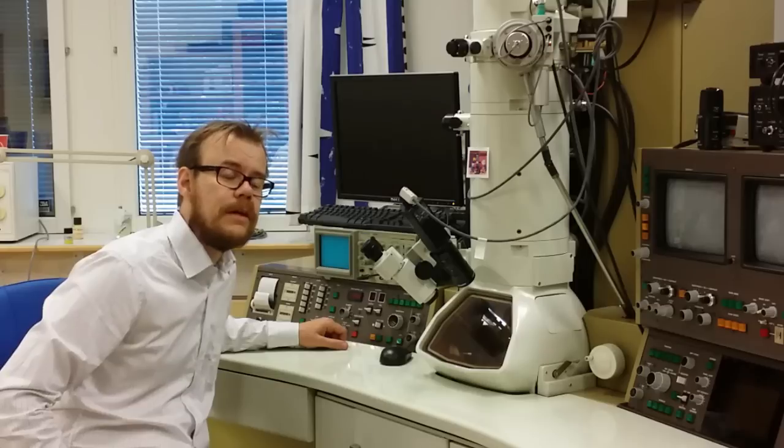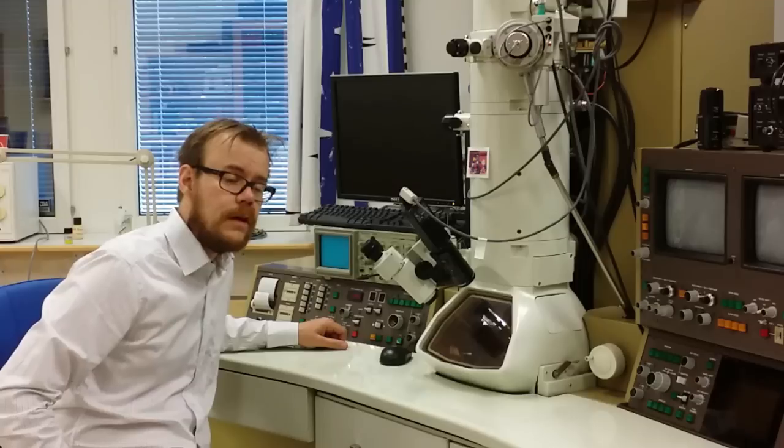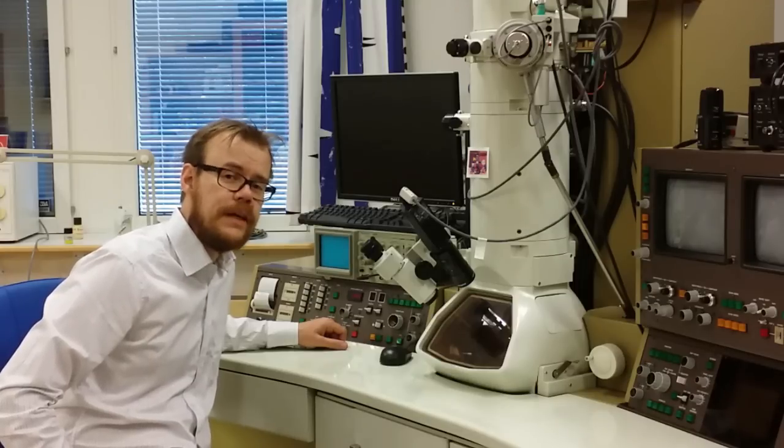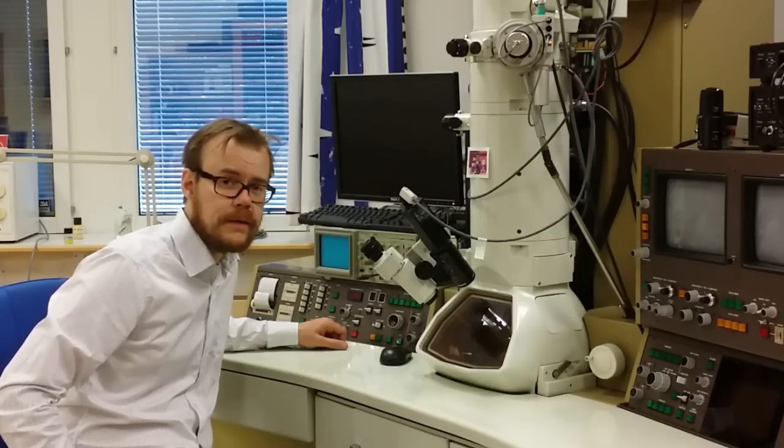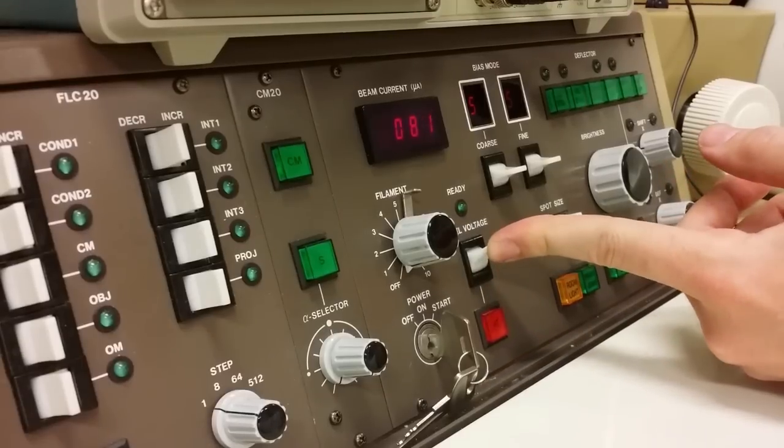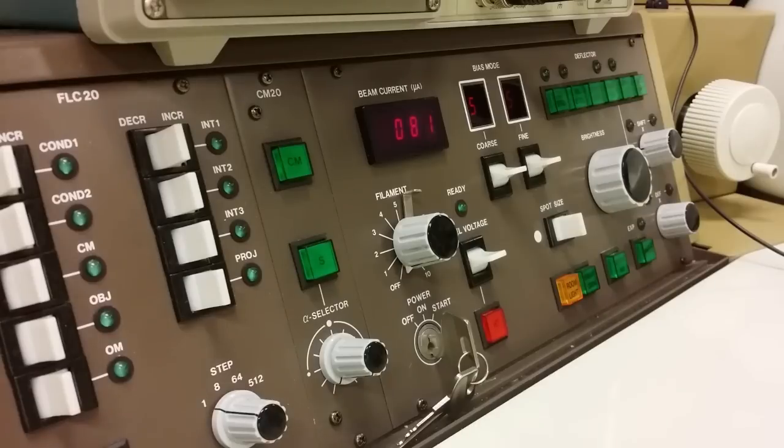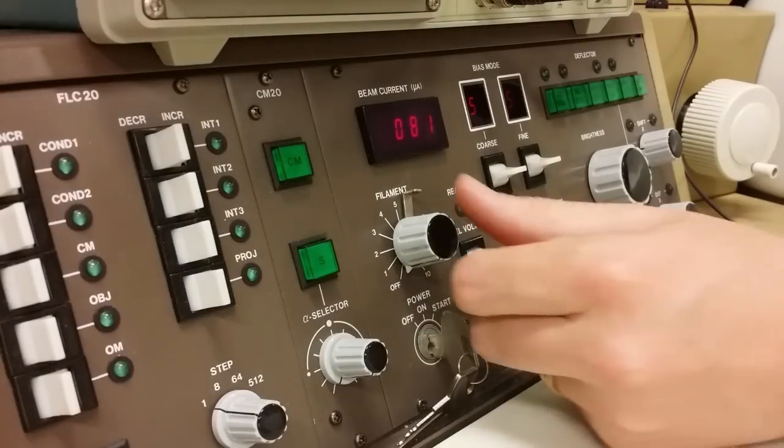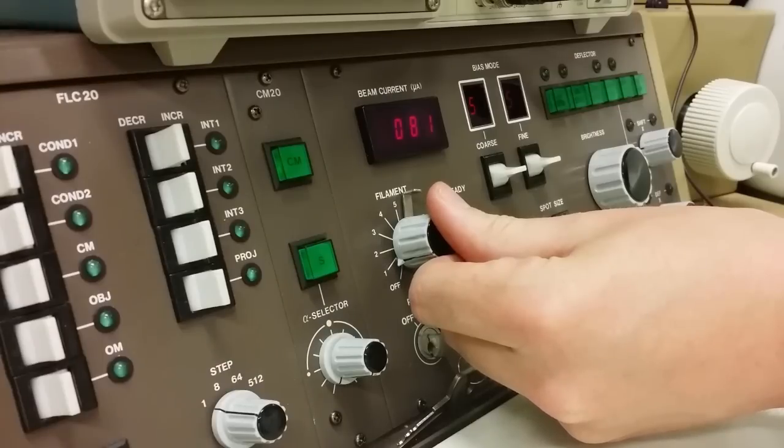The second step is to increase the accelerating voltage. And we do that in steps of 10kV. And we continue that until we reach the settings of voltage that we require for the experiment. Now I have reached 160kV. And I can see that the beam current here shows 81. And that is okay.